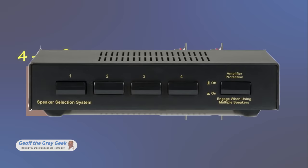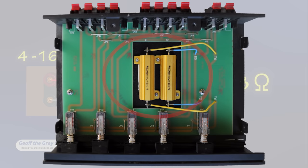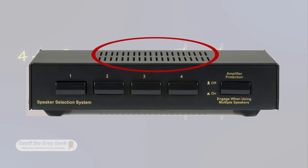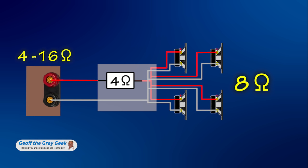Speaker Selectors which use series resistors tend to look like this. Inside there are two high power resistors and not much else. They normally have air vents for when the resistors get hot. They also have a protection switch or something similar. The switch is used when you have only one pair of speakers switched on. This bypasses the resistor and connects the speaker directly to the amp.